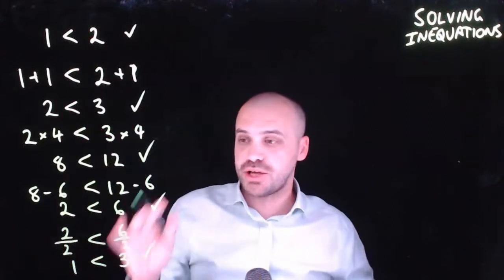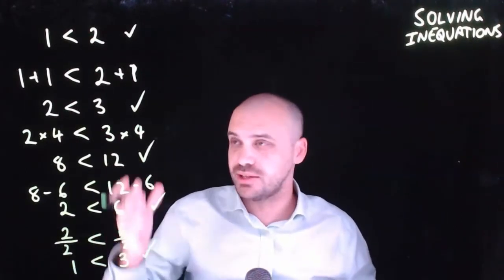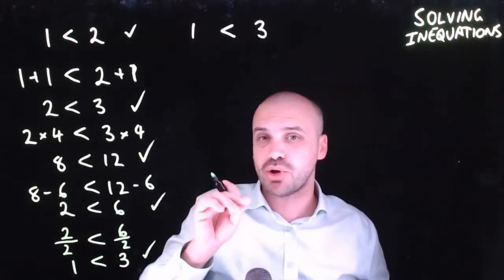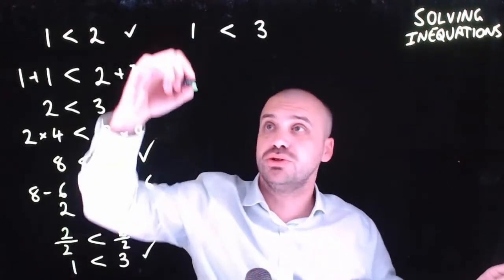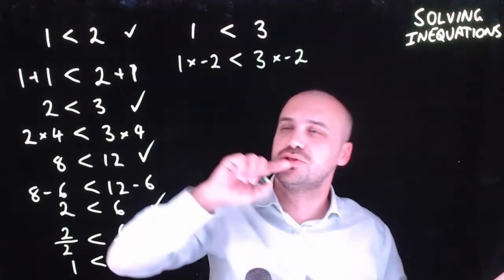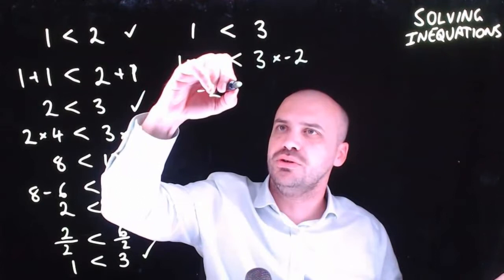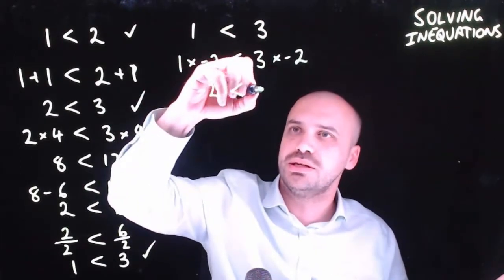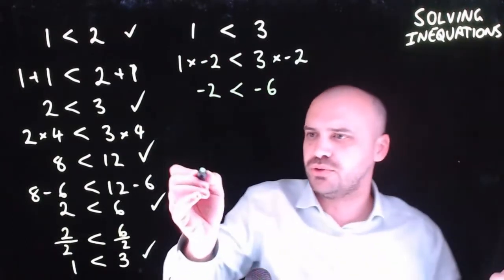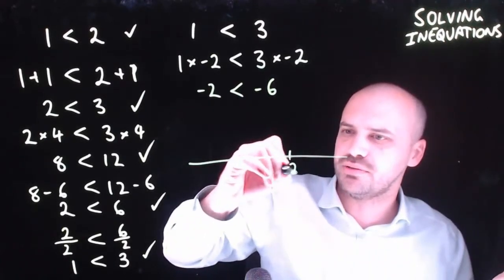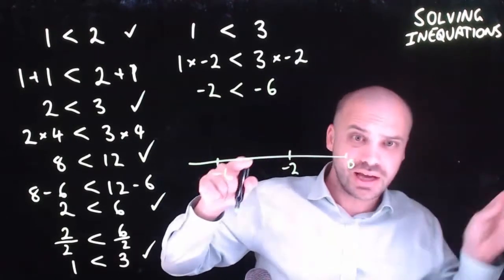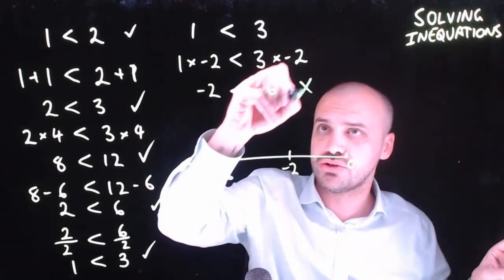You're probably guessing there's a trick. Taking 1 is less than 3 and multiplying by negative 2: 1 times negative 2 is less than 3 times negative 2 gives negative 2 is less than negative 6. But on a number line, negative 2 is larger than negative 6 — this is not true.